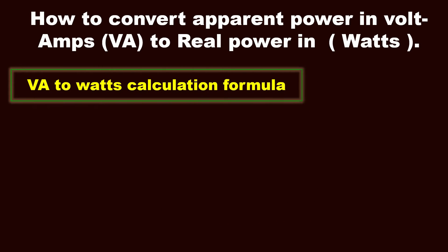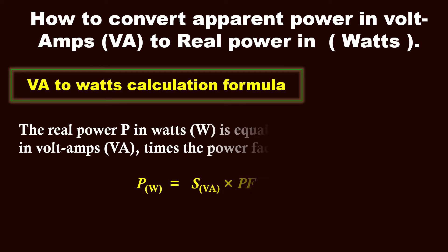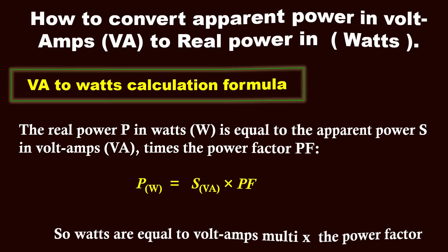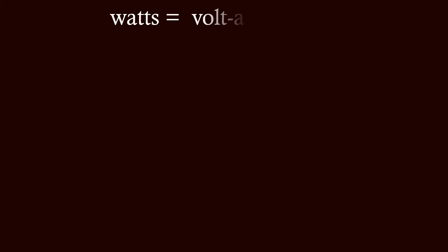So the formula for apparent power into real power is: the real power P in watts is equal to the apparent power S in volt-ampere multiplied by power factor. Watts equals volt-amps multiplied by power factor.